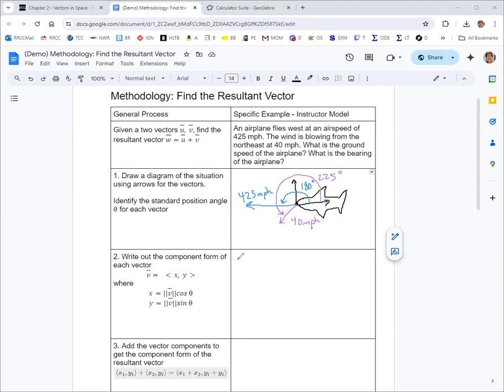We'll use p for the plane, and the formulas are shown there where the x component is the magnitude of the vector times the cosine of the angle. So the magnitude for the plane is the 425, and then the cosine of the angle is cosine of 180, and then 425 sine of 180. Cosine of 180 is negative 1, and sine of 180 is 0. So it's no surprise that this is just negative 425 in the horizontal and 0 in the vertical.